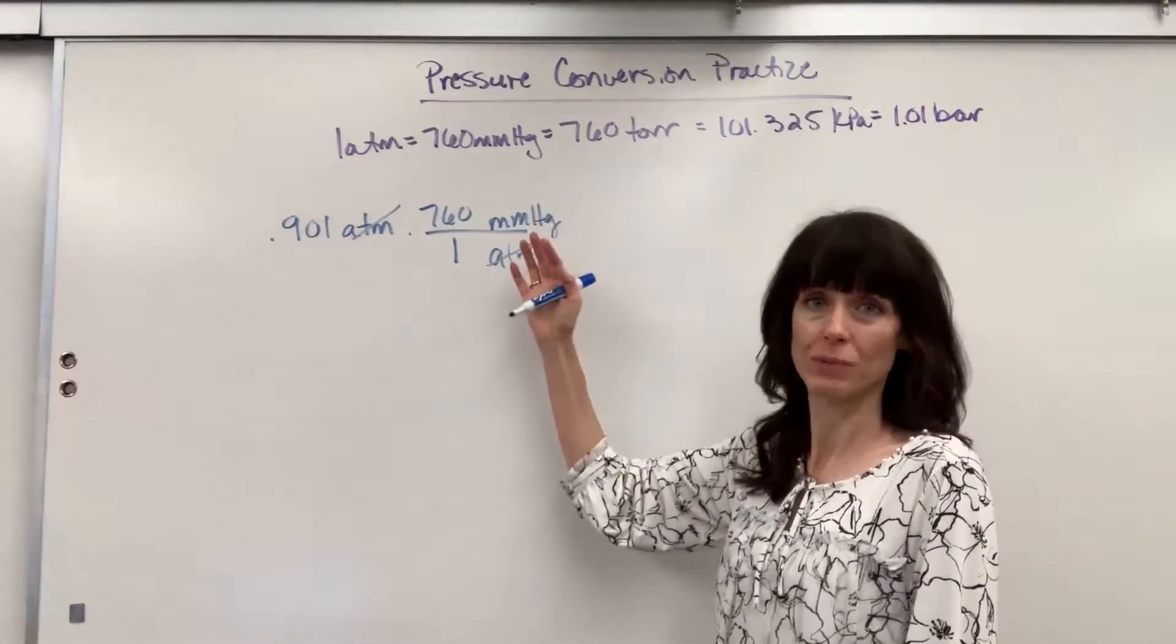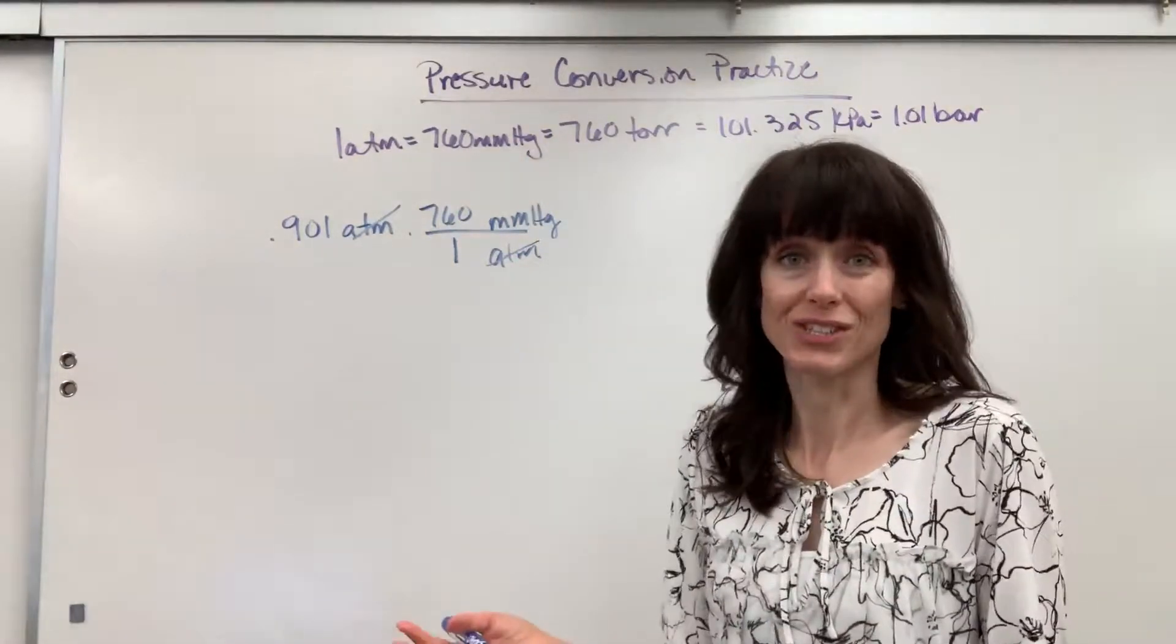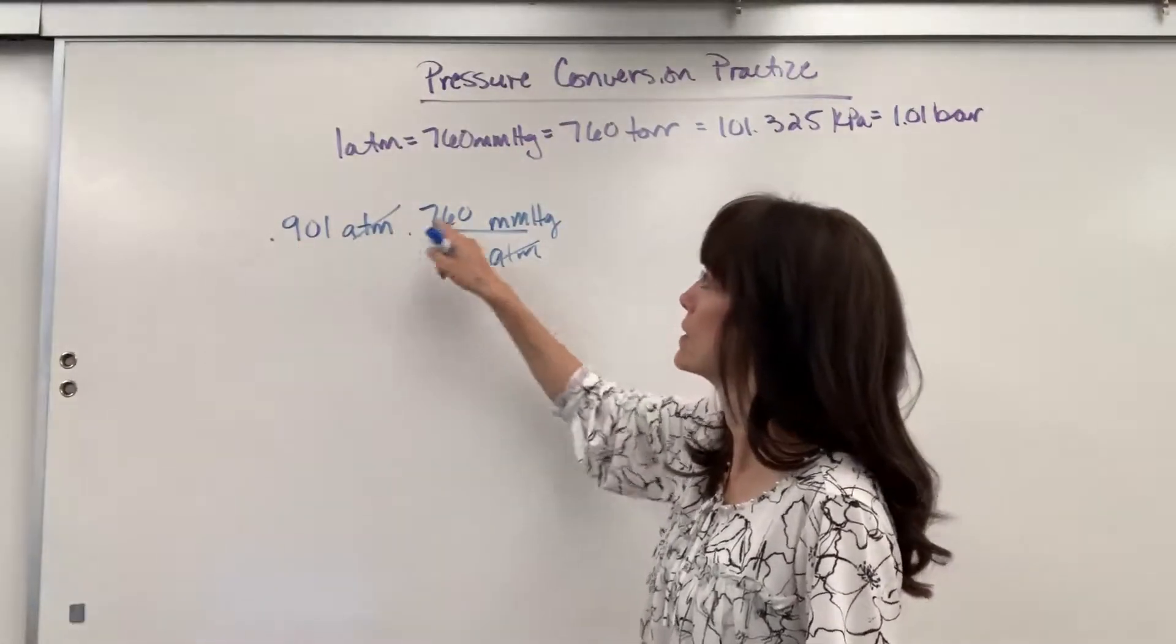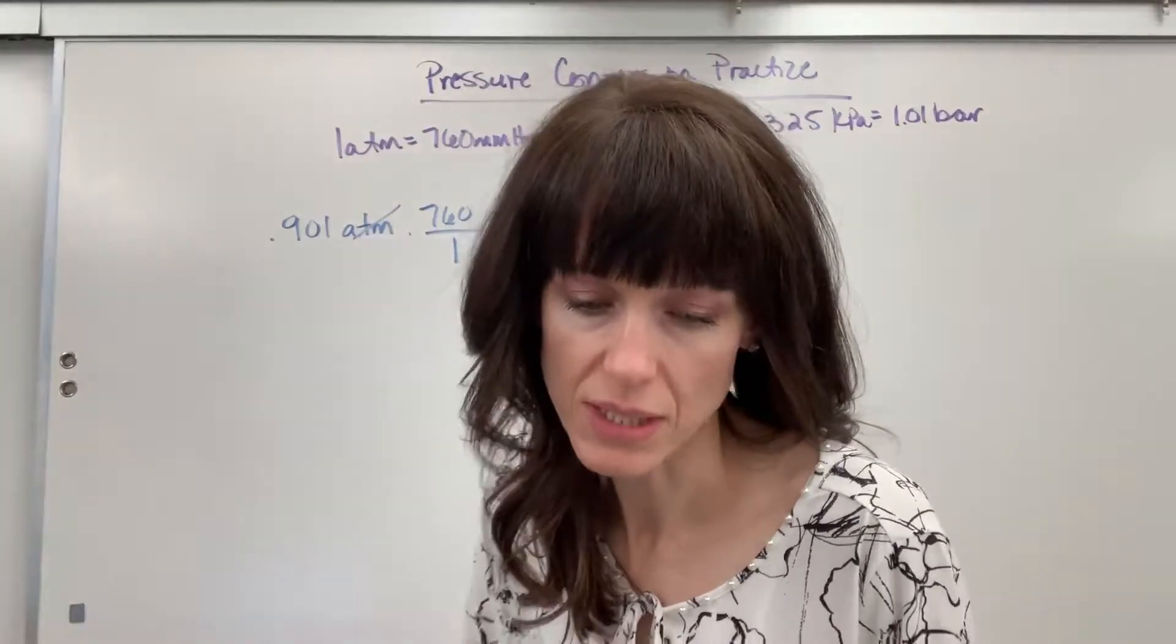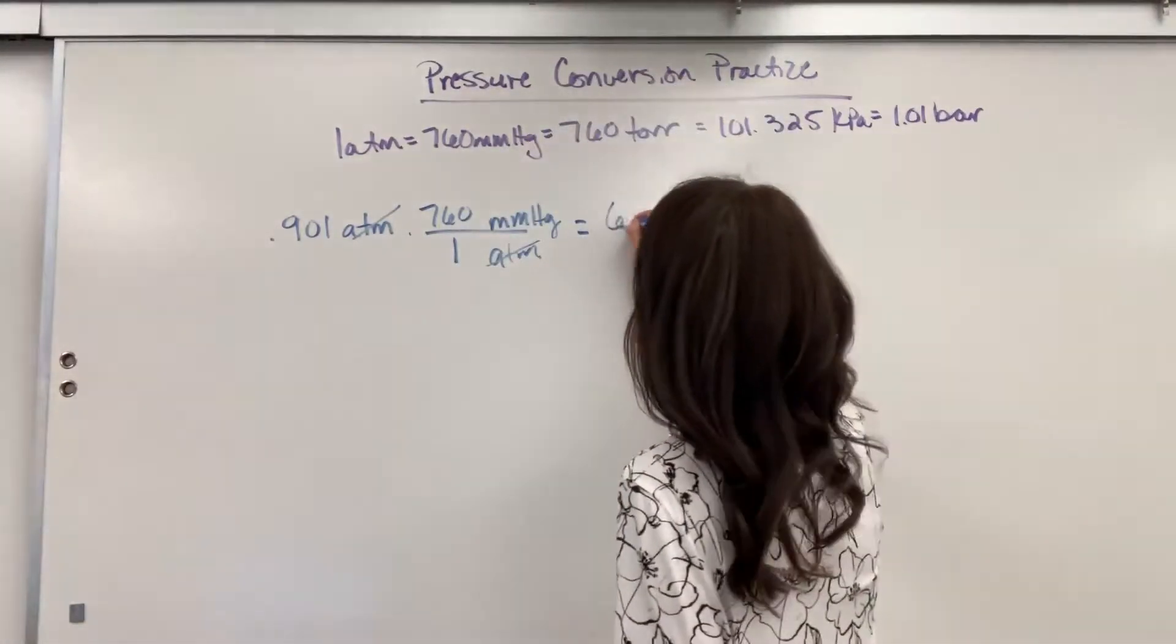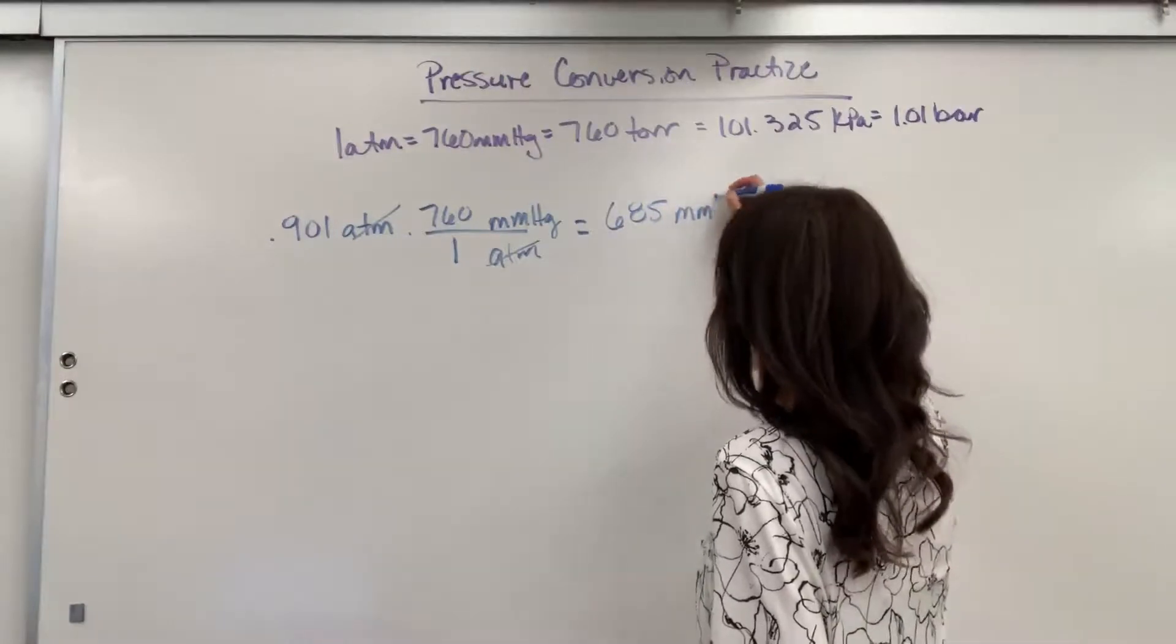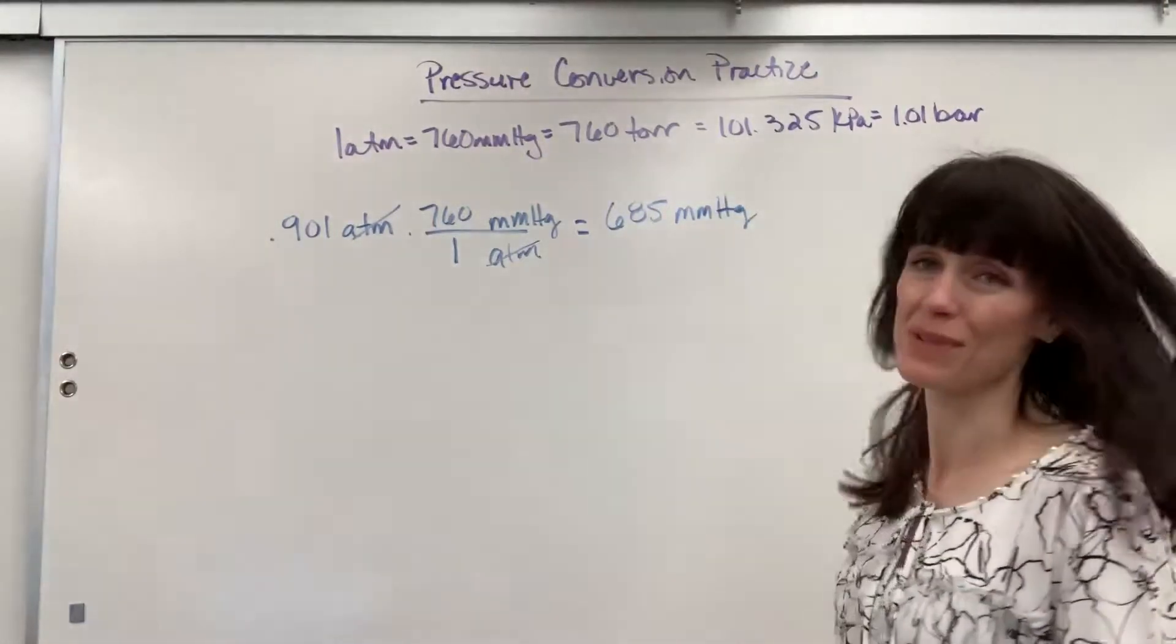So the units cancel, and what does this tell me to do? Anything in the numerator, we multiply. Anything in the denominator, we divide. Now that one isn't going to change anything. So all we have to do is put 0.901 times 760, and our answer is, excuse me, 685 millimeters of mercury.